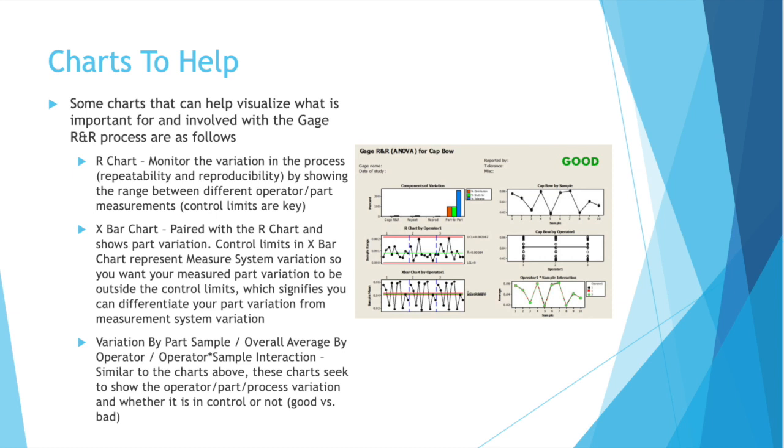Other helpful charts include variation by part sample, overall average by operator, operator sample interaction, but for all of those, similar to the charts above, these charts seek to show the operator part process variation and whether it is in control or not.